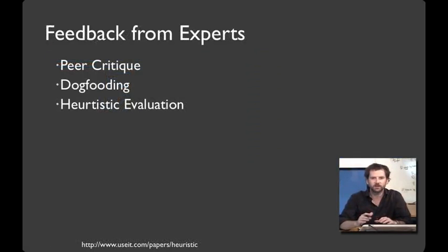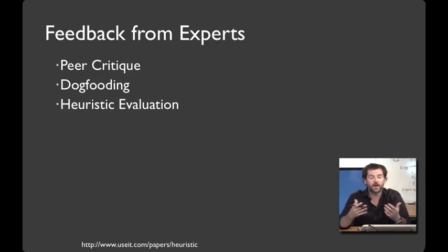Our third category of techniques is to get feedback from experts. For example, in this class, we're going to do a bunch of peer critique for your weekly project assignments. In addition to having users try your interface, it can be important to eat your own dog food and use the tools that you build yourself. When you're getting feedback from experts, it can often be helpful to have some kind of structured format, much like the rubrics that you'll see in your project assignments. And for getting feedback on user interfaces, one common approach to this structured feedback is called heuristic evaluation, and you'll learn how to do that in this class. It was pioneered by Jacob Nielsen.